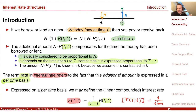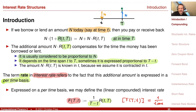In this chapter, I assume that all payments are guaranteed — there is no issue related to default. If the borrower could default and I might not get back the amount, there would be an additional component in the interest rate compensating for that default risk. That will come later.